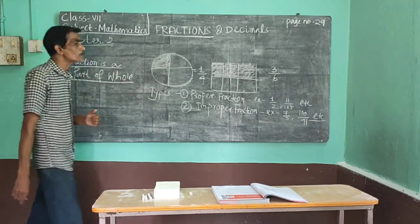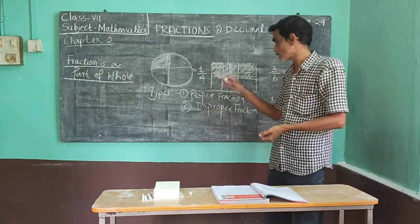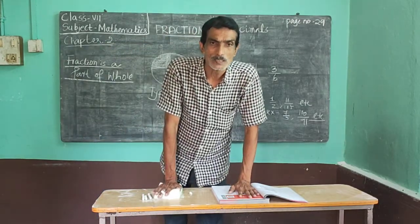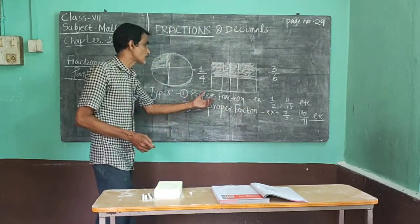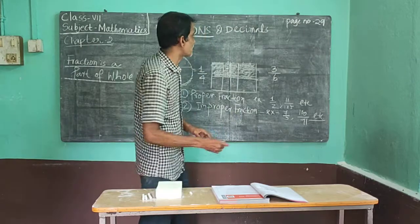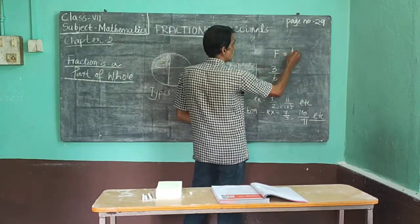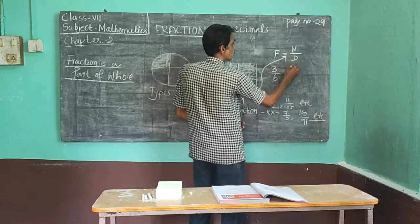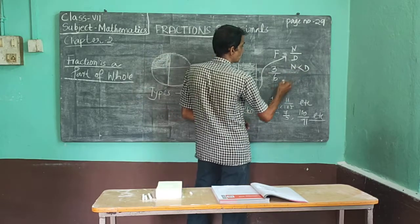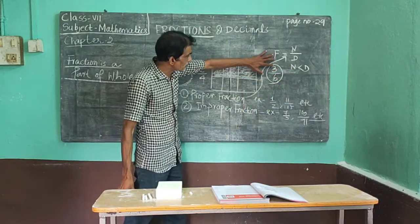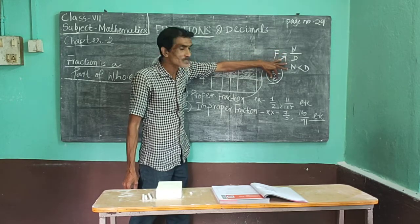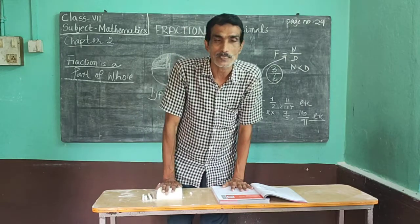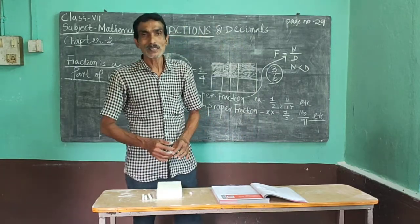Fraction is nothing but a part of a whole. There are two types of fraction: one is a proper fraction and the other is improper fraction. A fraction has two important components: one is a numerator and the other is a denominator. In a proper fraction, the numerator is less than the denominator. For example, three upon six — here three is the numerator and six is the denominator, and three is less than six. Such a fraction is known as a proper fraction. Please remember, the value of a proper fraction is between zero and one.